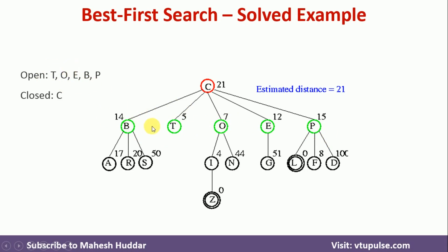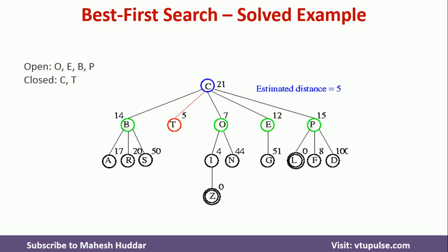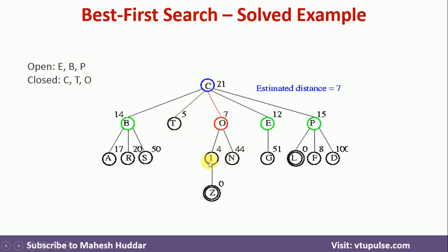Now we have generated these nodes and need to examine them. We select the first node, which is T. Once I examine T, it has no successors, so I put T into closed but add nothing to open. It is not a goal state, so we examine the next node, O. I put O into closed and examine it — I find two successors, I and N. I place I and N into open based on distance: 4 is the minimum so I comes first, and 44 is the highest so N goes last.